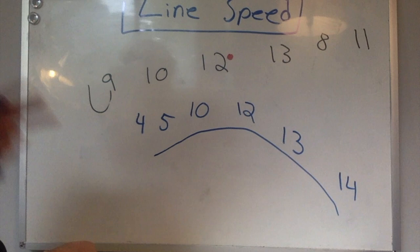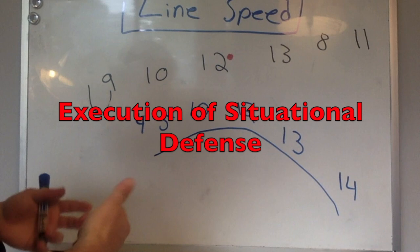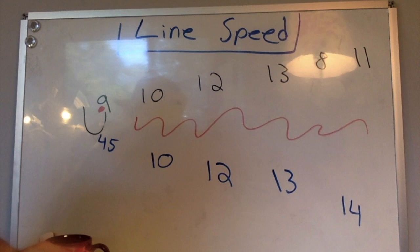Ultimately, teams don't need line speed. What they need is communication and understanding and the ability to execute the line speed that is needed at that moment.